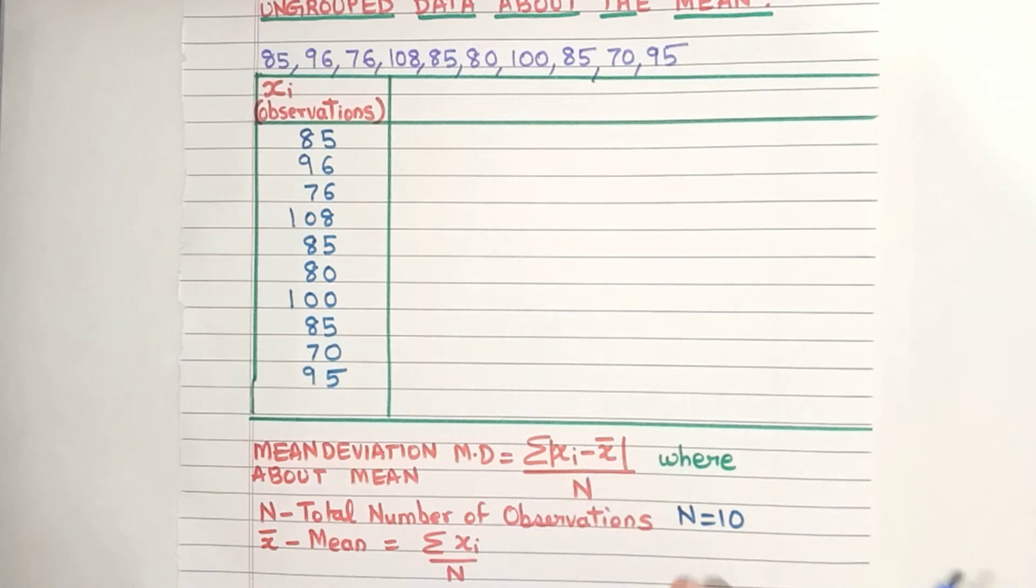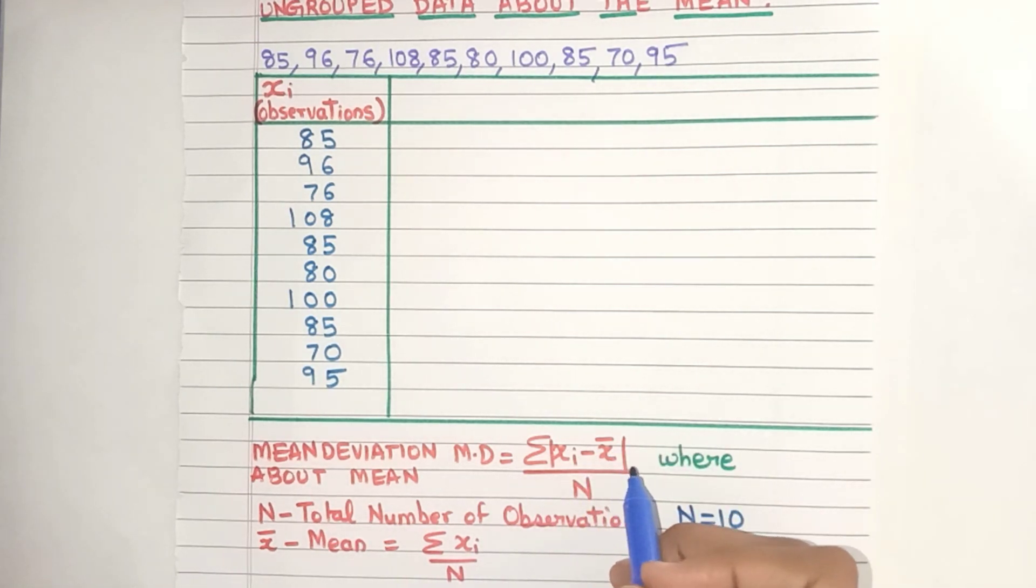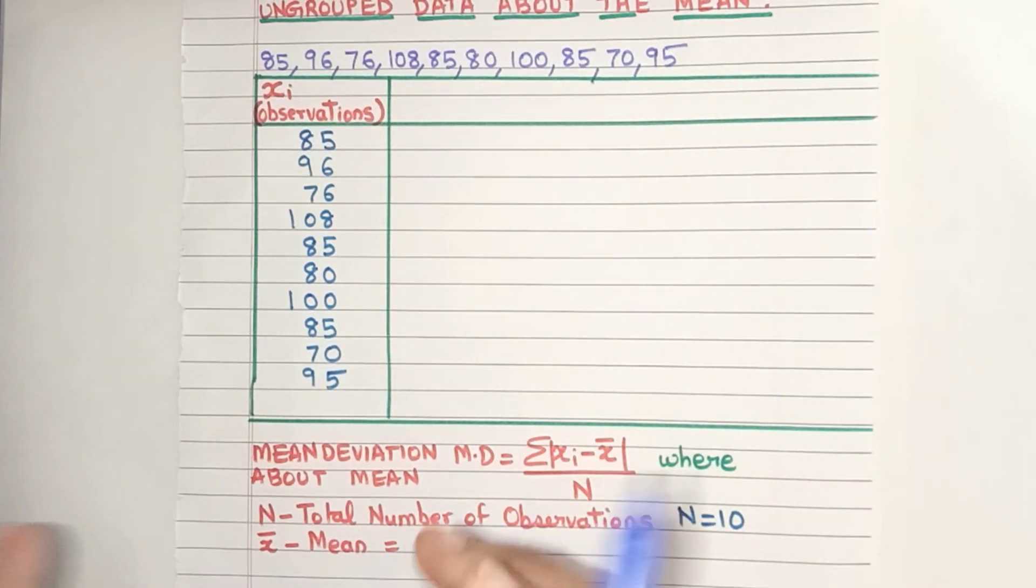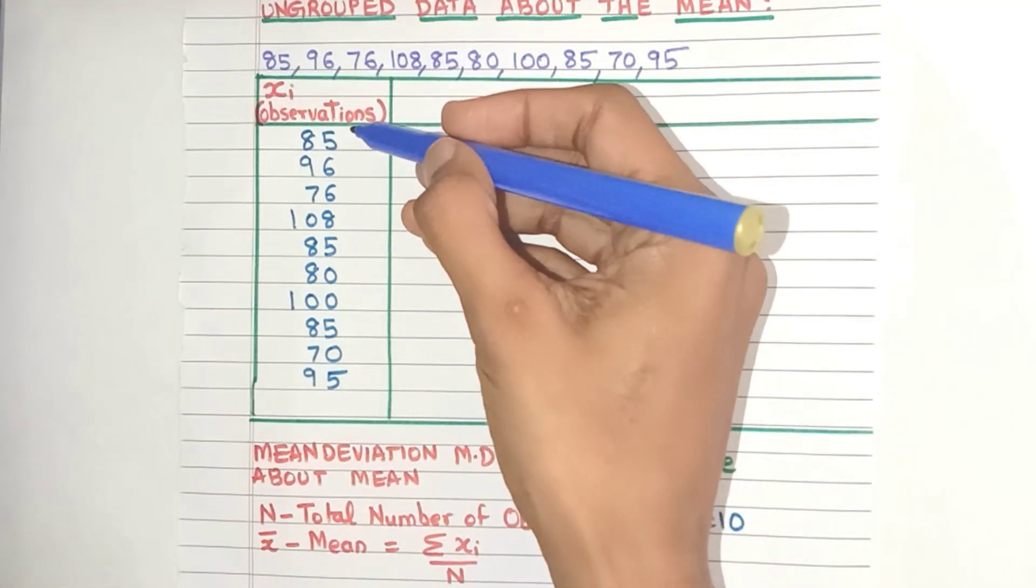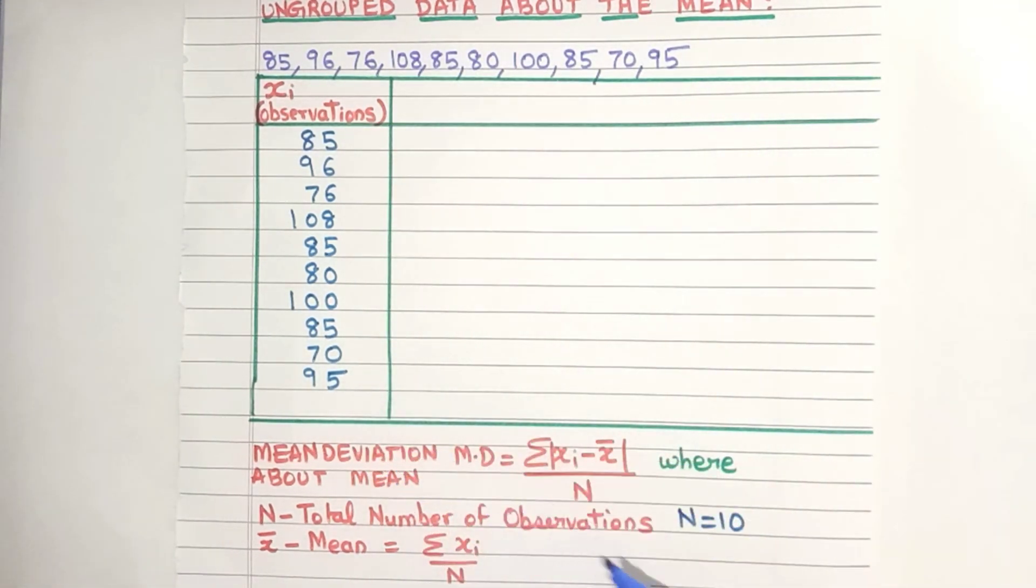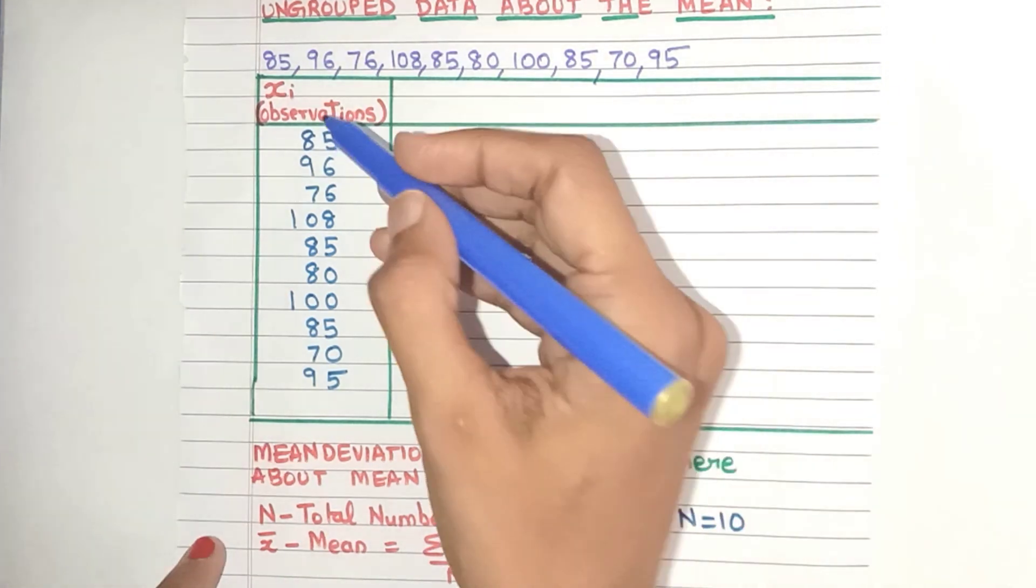Let's see again the formula - what do we need? We need x̄. Now what is x̄? It is the mean of this data, nothing but Σxi/n. Now what is sigma? It's the Greek symbol for summation. So we need to add all these xi values and then divide by n. Let's add them up.